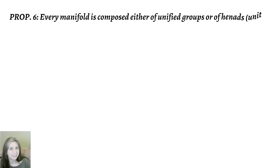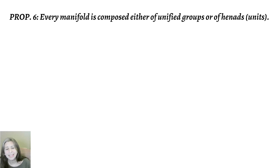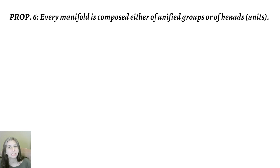Today I'm going to be using slides because I want to be able to do a little more with them, and these two propositions are not very long. So Proposition 6 states that every manifold is composed either of unified groups or of henads. Henad is actually a transliteration of a Greek word which means oneness, or as Dodds puts it, units. And we're also going to see how he describes what these unified groups are.